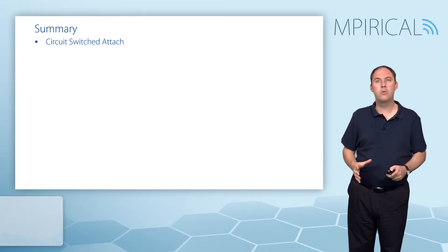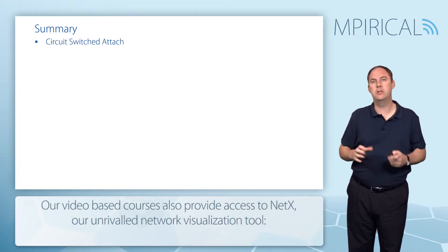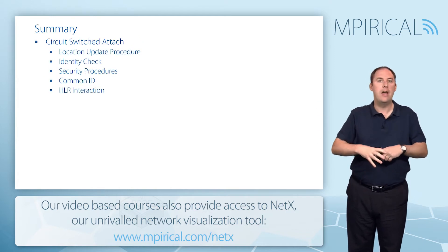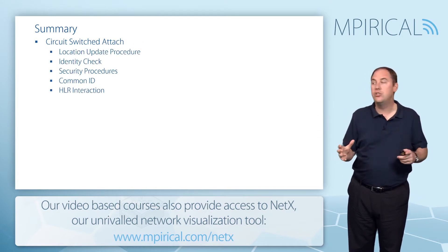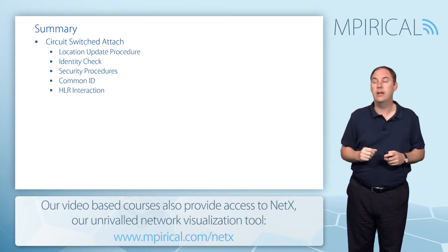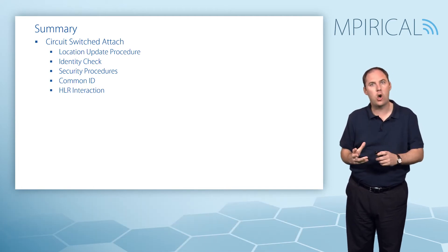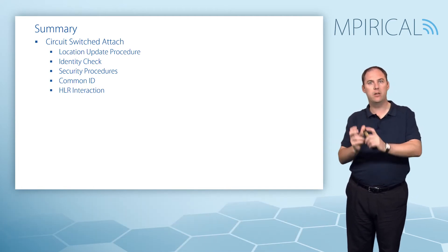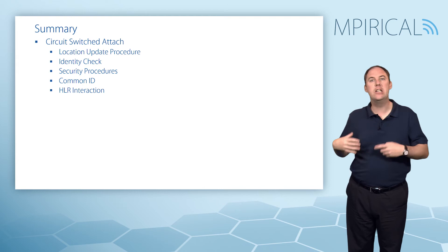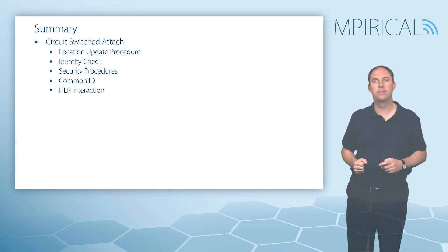In summary, we've looked at the UMTS circuit switch attach procedure. We've identified that it's an end-to-end procedure that can include identity checking and security parameters. It includes the common ID carrying the IMSI down to the RNC, and it has interaction with the HLR to download the subscription profile.